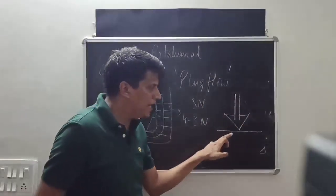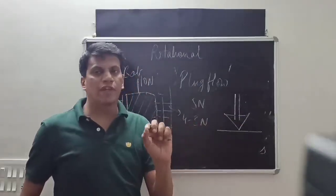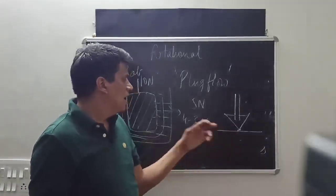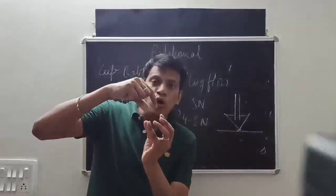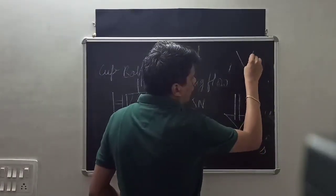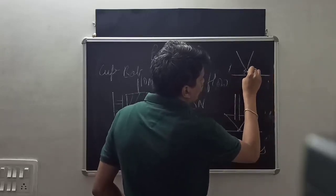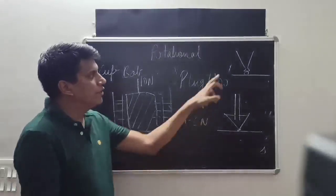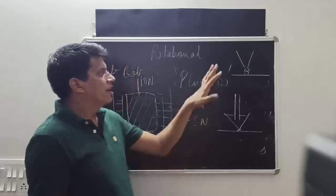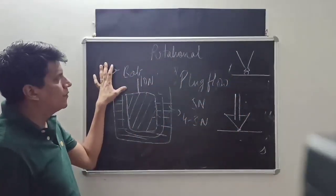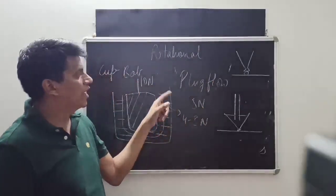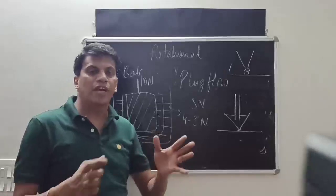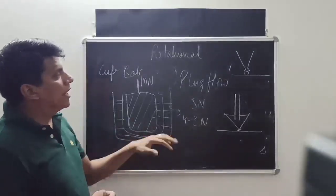In the cone and plate viscometer, either the cone moves or the plate moves. It requires a very small amount of material — usually only 0.6 mL. Because the cone contacts all the material simultaneously, there is no chance of plug flow. The same force is exerted on the whole material. The estimation is done in the same way: viscosity equals k times W divided by R, recording the changing weight and changing RPM.